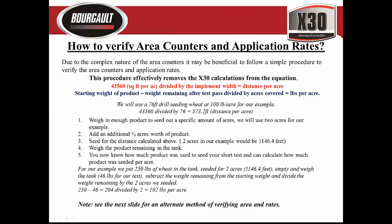If you are questioning an application rate, we came up with a couple of different methods to verify that the unit is putting down the product requested, while taking the X30 out of the calculations. The first method is a distance check. There is a simple formula: there are 43,560 square feet in an acre, so you divide your implement width into that — that will give you the distance you need to travel to cover one acre.